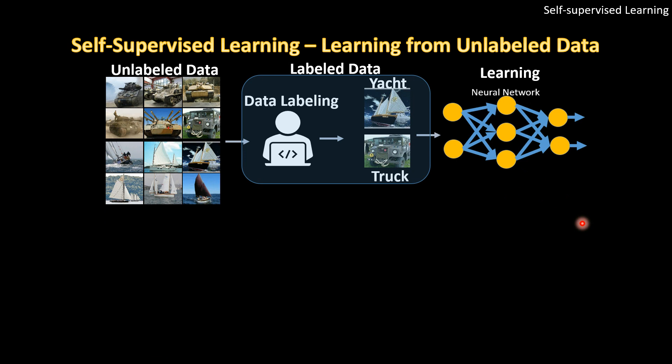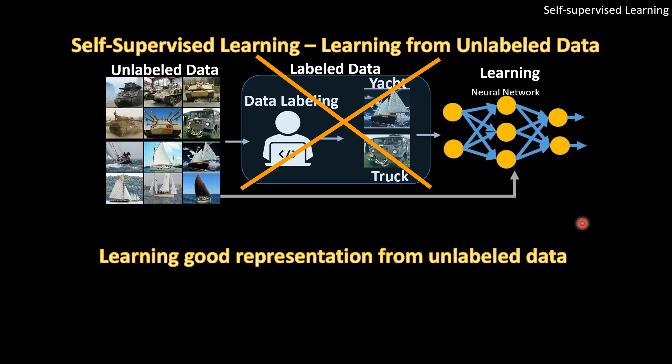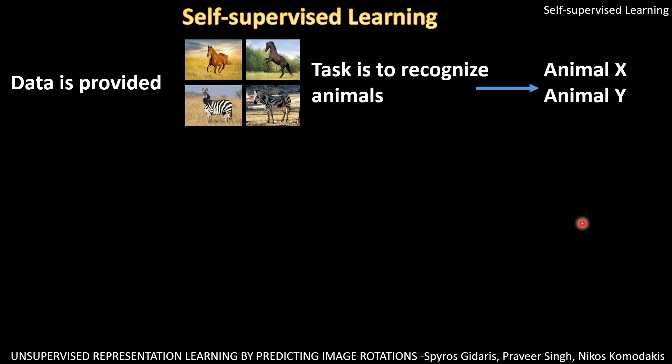The goal of self-supervised learning is to not use labeled data, but just use unlabeled data to learn good representations. For example, suppose some data is provided to you and you don't know what it is, and your task is to recognize animals. In supervised learning you would have labeled it as horse or zebra, but here you only know there is animal X and animal Y — you don't know anything about them.